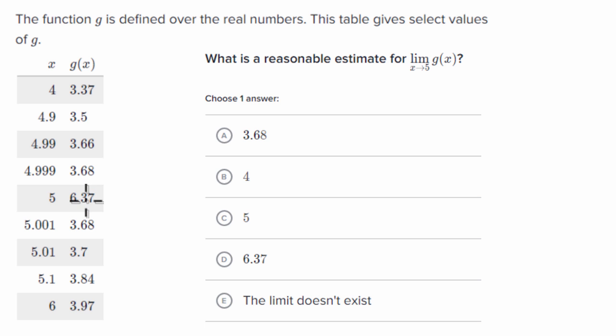So my most reasonable estimate would be, well, it looks like we are approaching 3.68 when we are approaching from values less than five, and we're approaching 3.68 as we approach five from values greater than five. It doesn't matter that the value at five is 6.37. The limit would be 3.68, or a reasonable estimate for the limit would be 3.68.